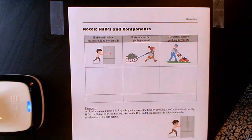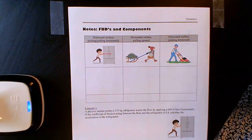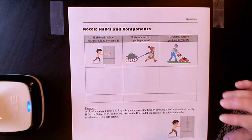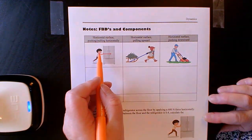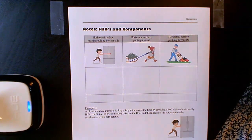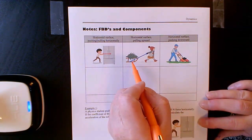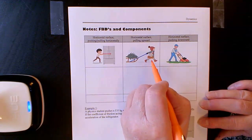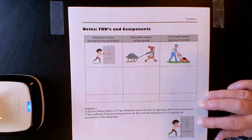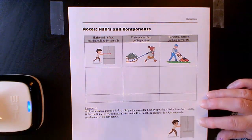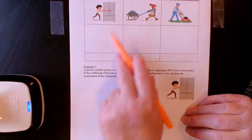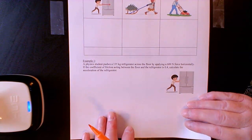Hello and welcome back. In this video we are going to be looking at free body diagrams that involve components. A force applied horizontally can be drawn directly on our free body diagram. But a force applied at an upward or downward angle is going to involve components. Let's look at three quick examples and then come back up and write our summary statements.